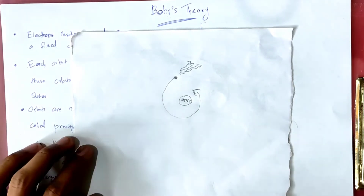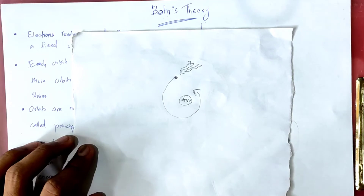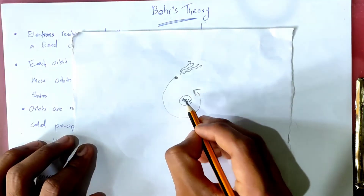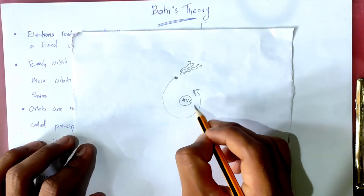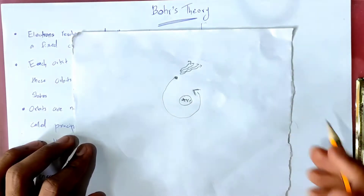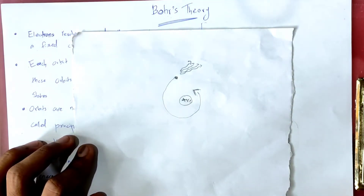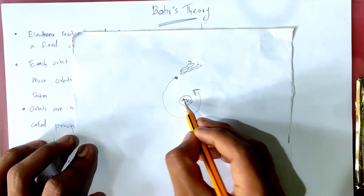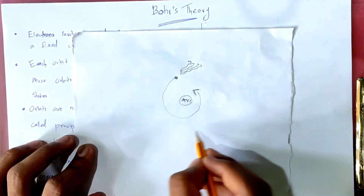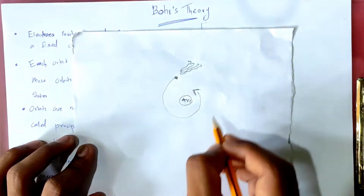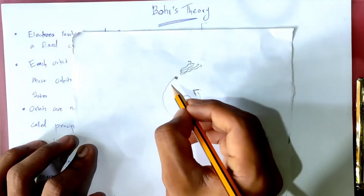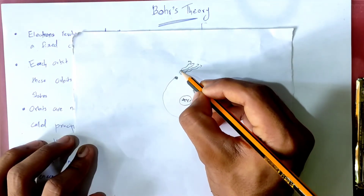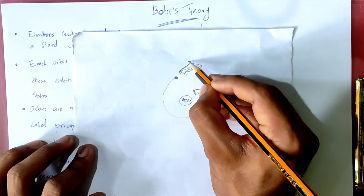Rutherford's atom model: the atom model has a positive charge in the nucleus, and the electron revolves around it. But a famous scientist — Maxwell — showed that an accelerating charged particle will transform its energy into electromagnetic radiation.